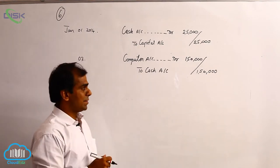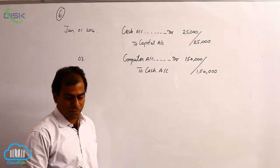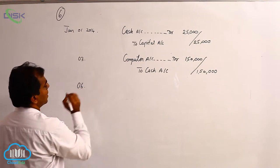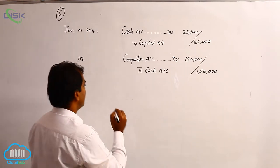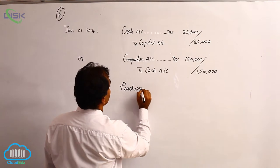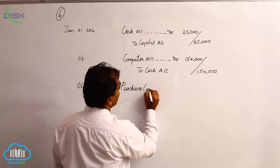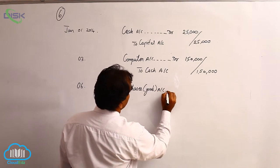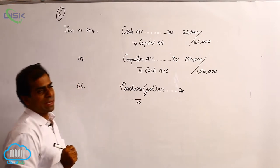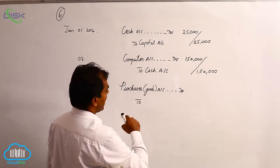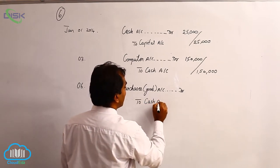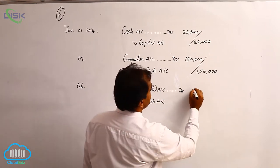The next transaction is on 6th January — purchased goods for ₹6,000. Goods being a real account, we are buying them, so we use the word Purchases. Recalling the rule of real account, we debit Purchases Account because goods are coming in. Naturally we paid cash; cash is a real account going out, so we credit Cash Account. The amount being ₹6,000.